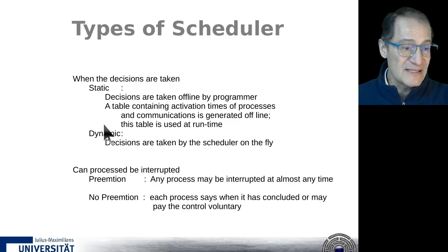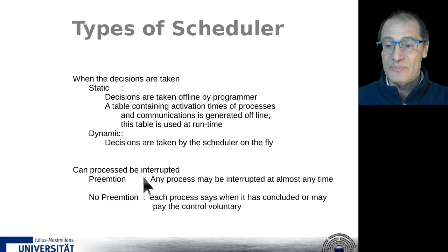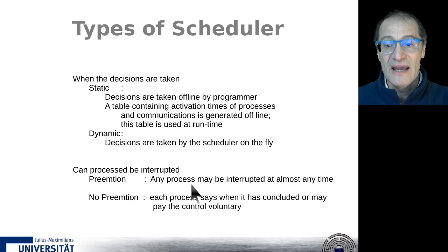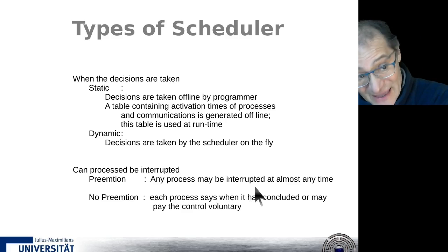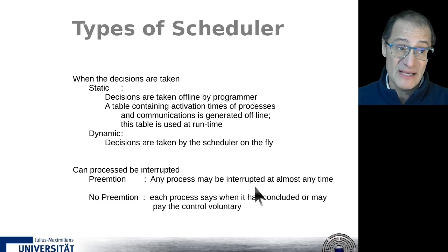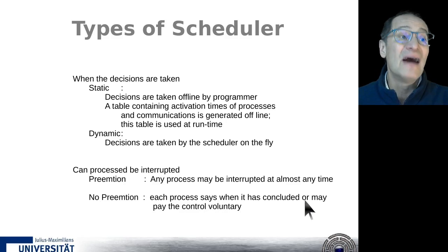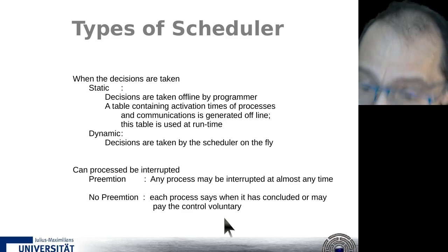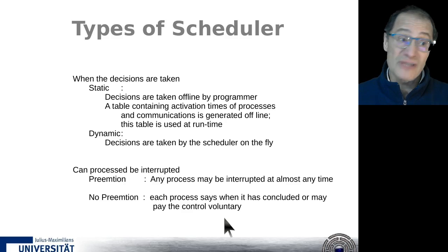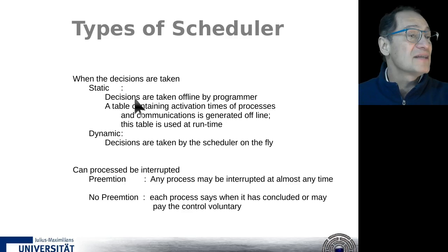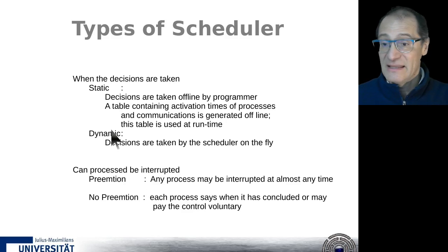The next way to classify the scheduler is preemption or not preemption — whether tasks may be interrupted. If tasks may be interrupted at any time, then we are talking about a preemptive system. Any process may be interrupted and suspended; it has to sleep and another process can continue working in its place. This decision is taken by the operating system. In a non-preemptive system, a process has to say when it has concluded, and gives control voluntarily. If a process wants to keep control forever, it will, and all other processes have to wait.